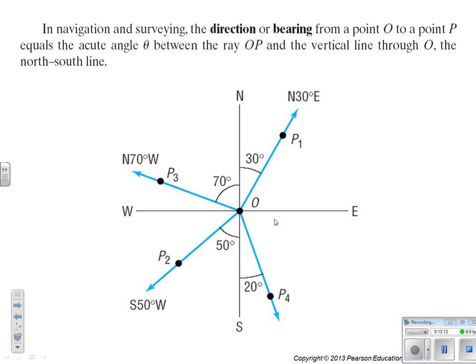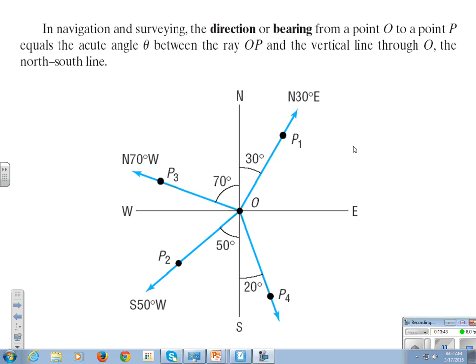All right, so let's look at bearing real quick. This is thankfully pretty easy. If you're in the northeast quadrant, then your bearing is your angle that you are from the north-south line. However many degrees you are from the north-south line, and then you put your either north or south in the front, and your east or west after that.